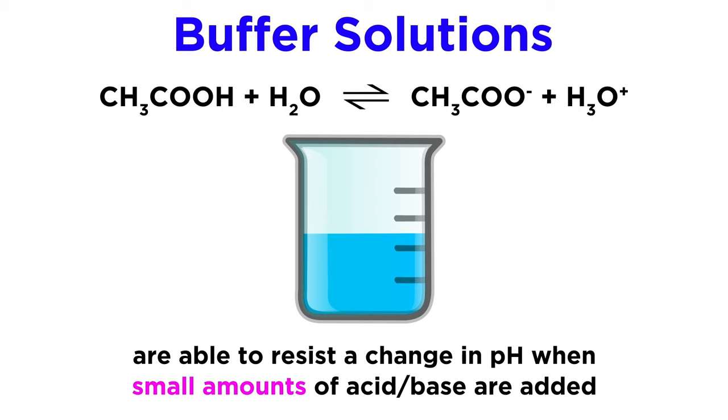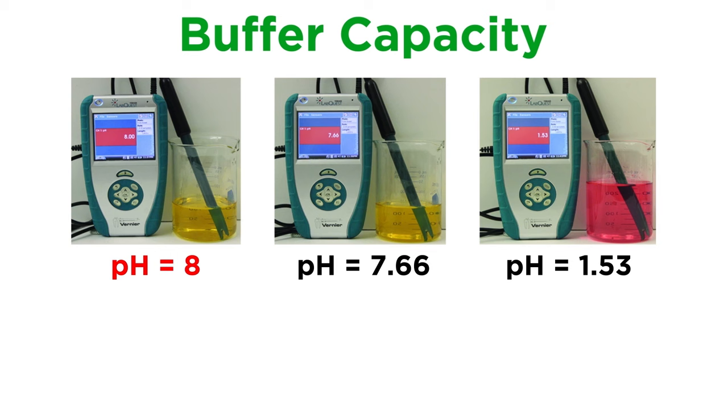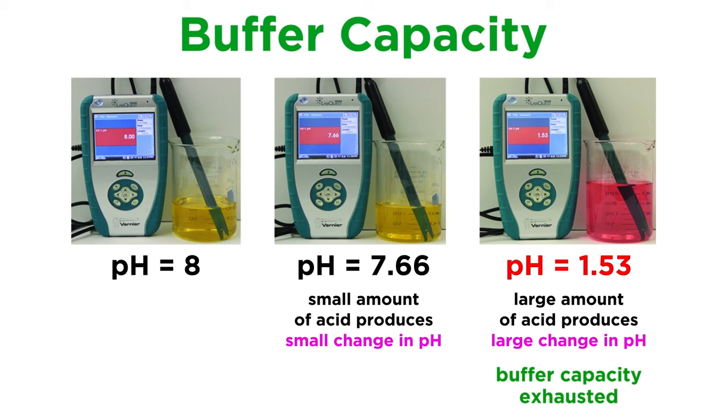As we can see here, in the beaker on the left we have a buffered solution at pH 8, and the addition of a small amount of acid will not have a substantial effect on the pH, which is why the beaker in the middle experiences only a small change in pH, despite the addition of acid. But once we add too much acid, as we can see from the dramatic increase in volume in the beaker on the right, the buffer capacity of the solution is exhausted, and the pH drops all the way to 1.53.